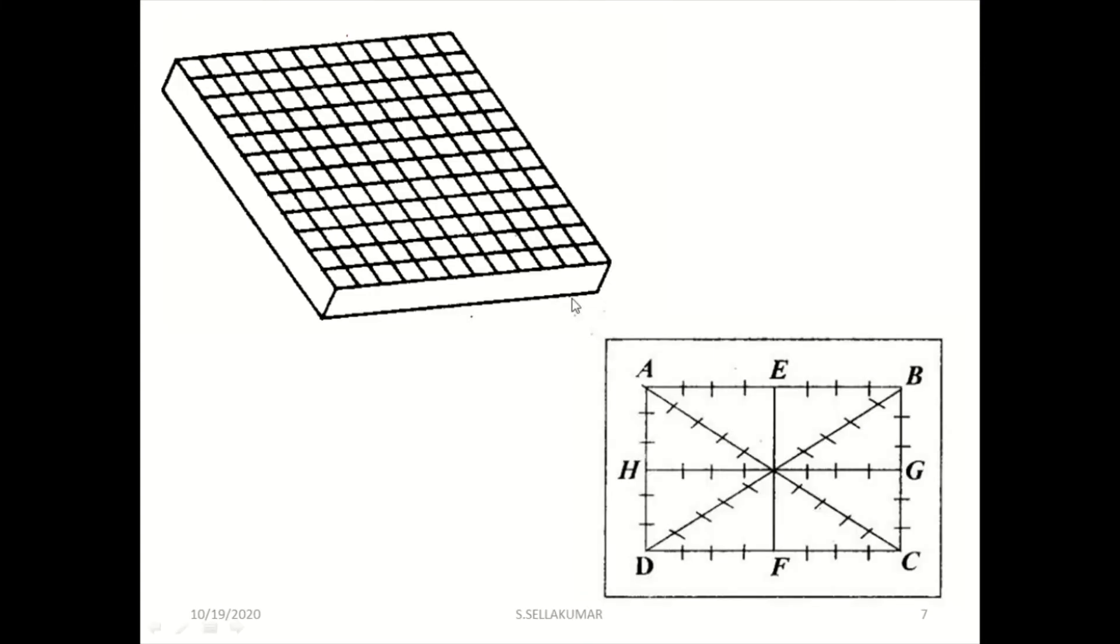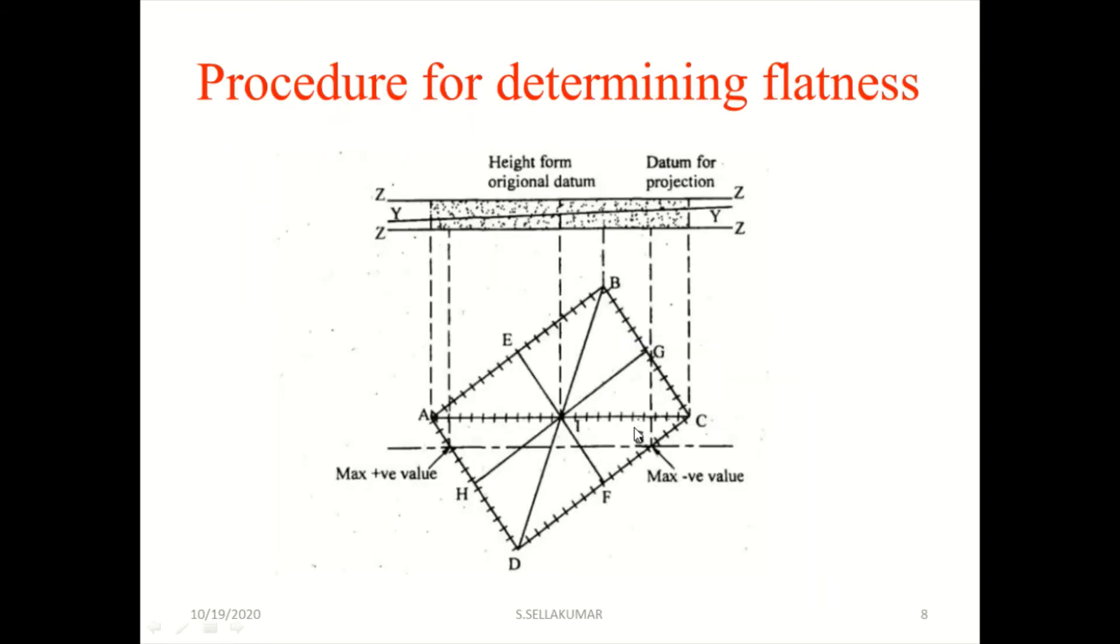For flatness testing, you take random points to survey that pattern. Measure all the places, and then you can easily measure that. This is the example: this is the maximum positive value, the minimum negative value. This is the height of the datum over the design form. This is the datum for projections, and then x1, y, and z1 are calculated.